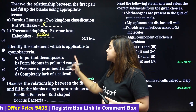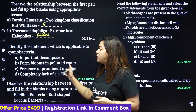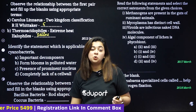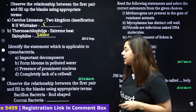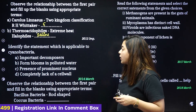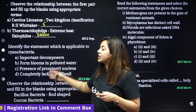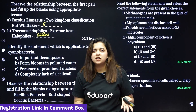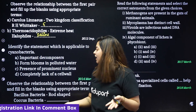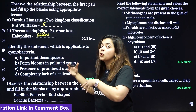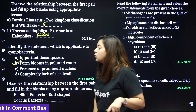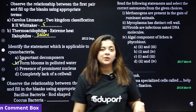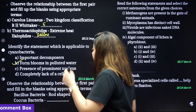This question asks you to identify the statement which is applicable to cyanobacteria. The options include anaerobic bacteria and important decomposers. The correct answer is that cyanobacteria form blooms in polluted water.